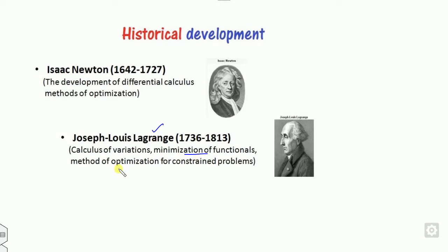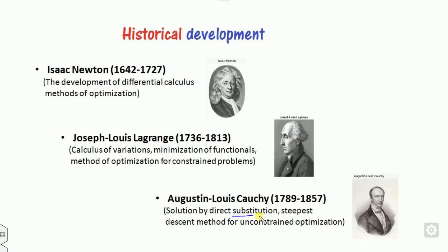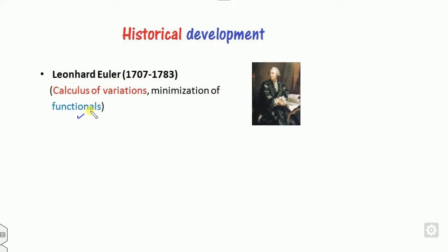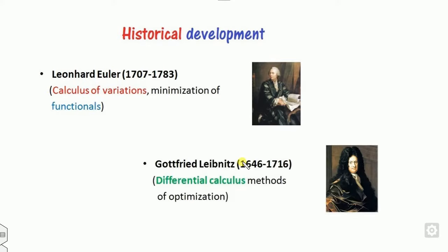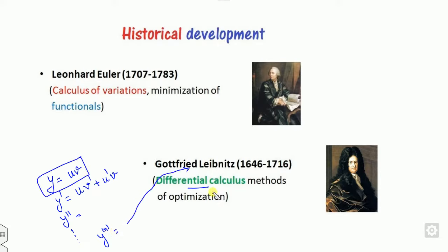After that, you studied Lagrange — constrained problems initially proposed by the famous Lagrangian. Then there is the steepest descent method for finding solutions, initially proposed by Cauchy. Euler also contributed with calculus of variations for optimizing functions. And you may know Leibniz's theorem for calculating the nth derivative of a function like u times v. All of this differential calculus can be applied to optimization.